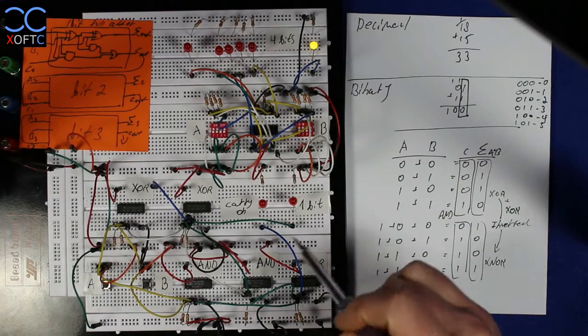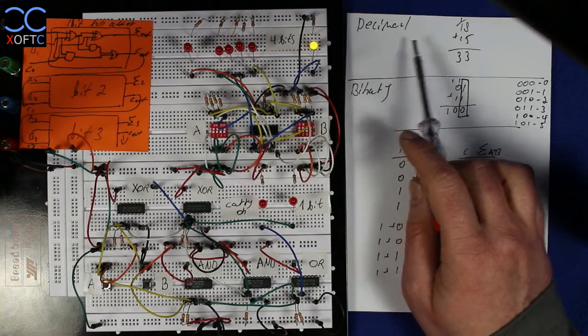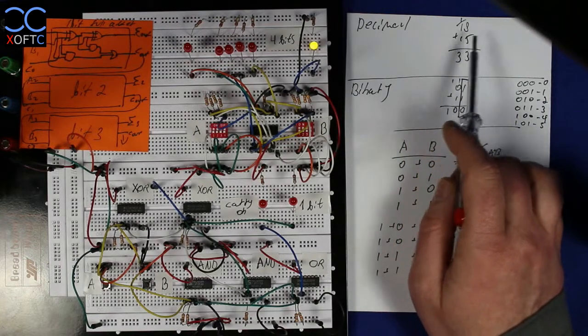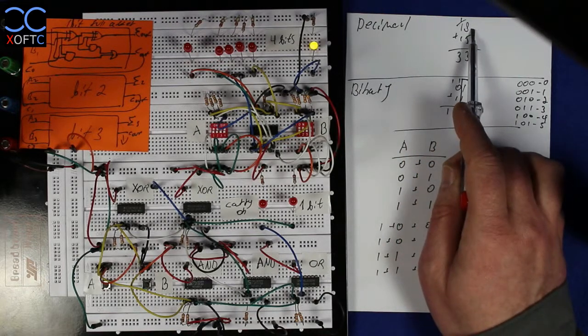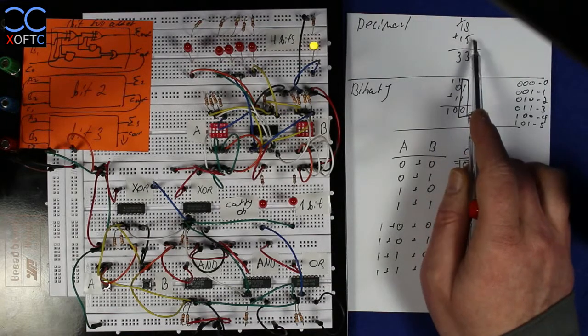To understand how this adder actually adds two binary values together, first let's look at some decimal adding. That is what we do every day. For example, if I want to add 18 and 15 together, I will take the 8 and add 5, and that is 13.